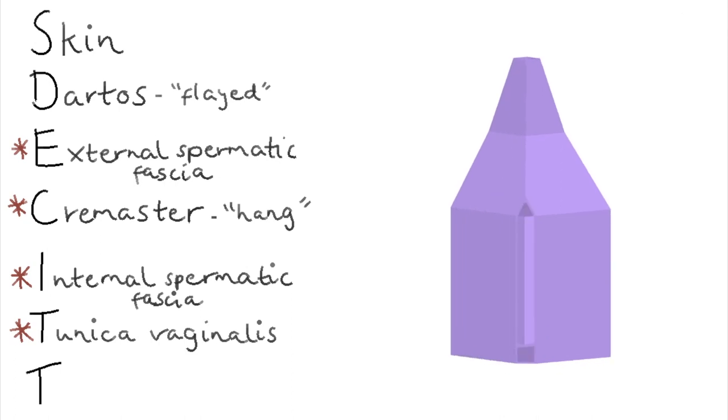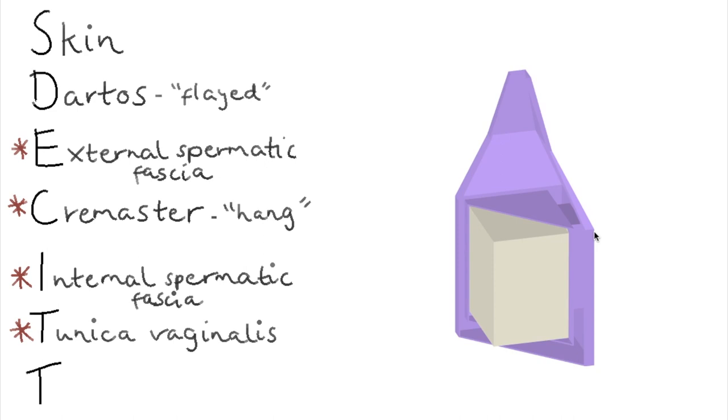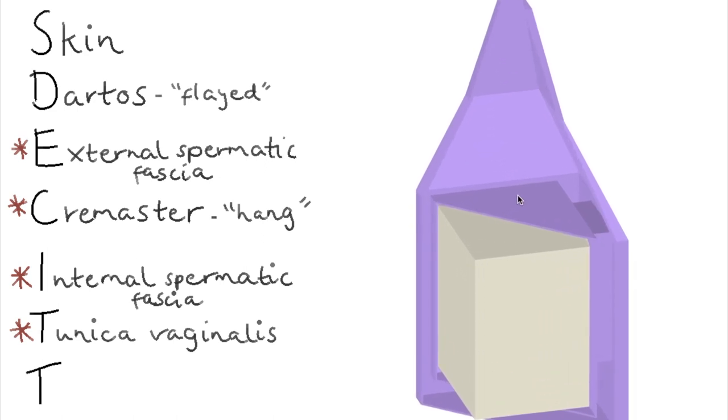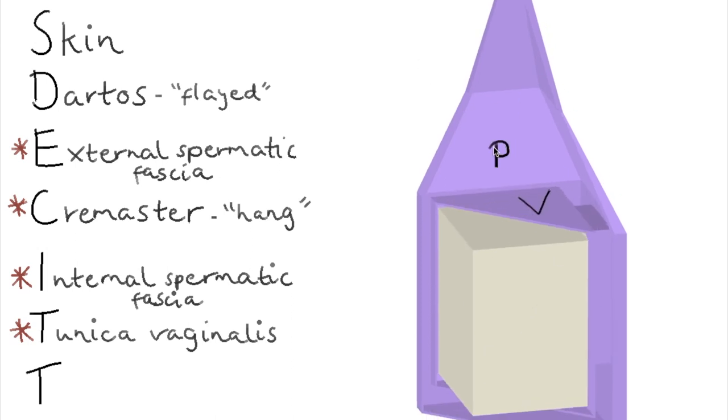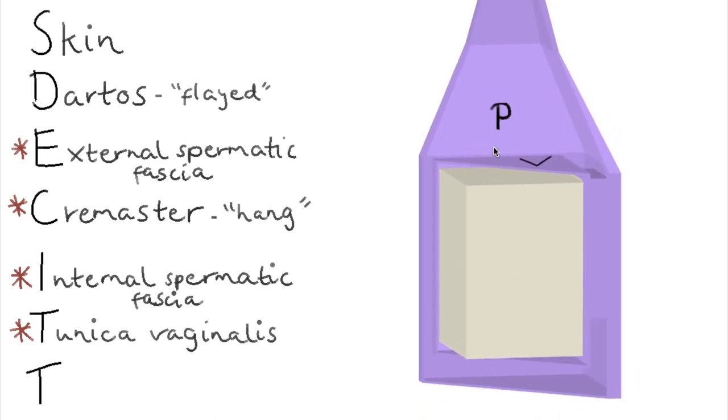And just as the peritoneum has a parietal and a visceral layer, so too does the tunica vaginalis. So that's the visceral layer. Here it sticks to the viscera, which is the organ. And there's the parietal layer, which sticks to the wall.